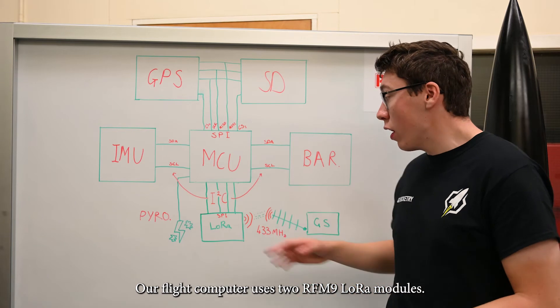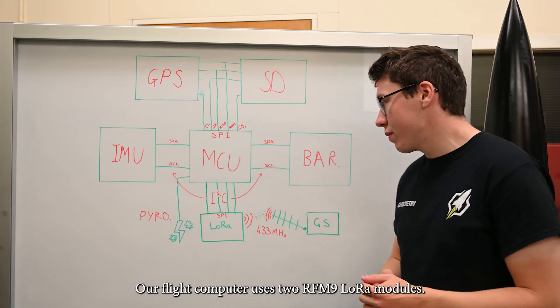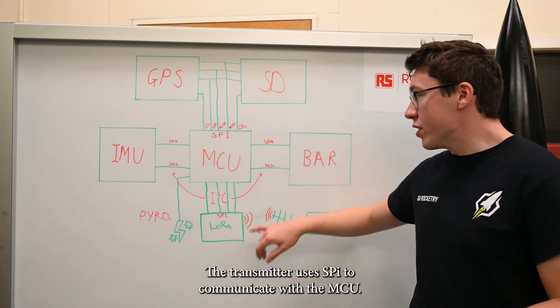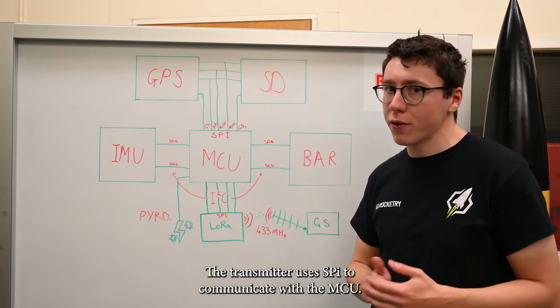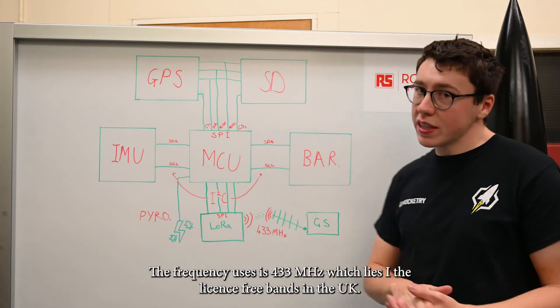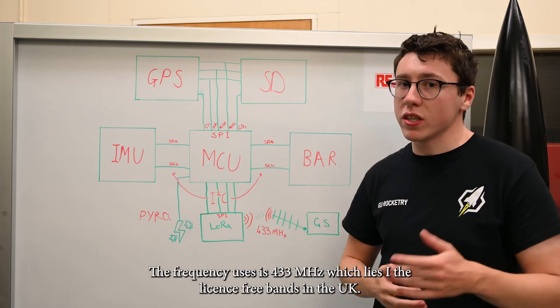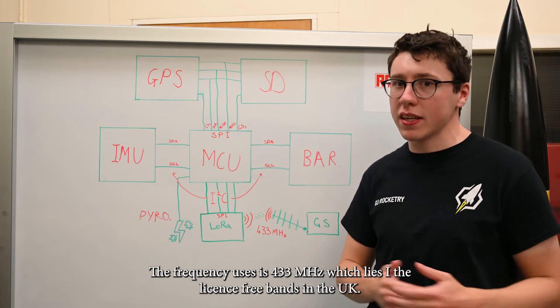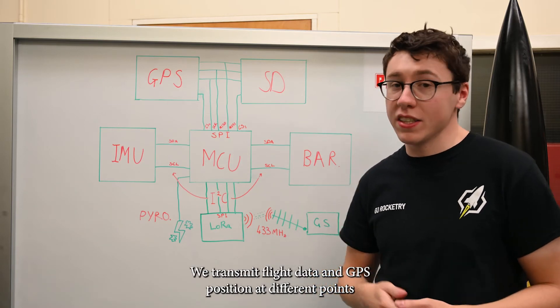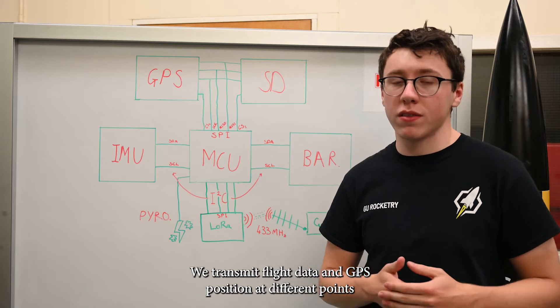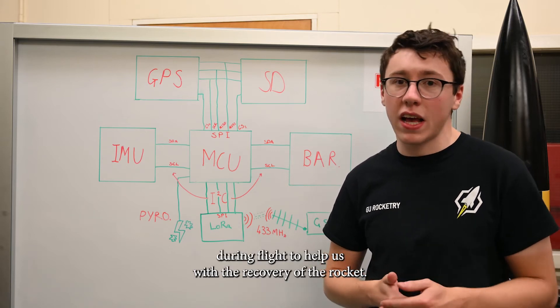Our flight computer uses two ARC-L9 LoRa modules. The transmitter uses SPI to communicate to the microcontroller. The frequency is 430 MHz, which lies on a license-free band in the United Kingdom. We transmit flight data and GPS positions at different points in flight to help us with the recovery efforts.